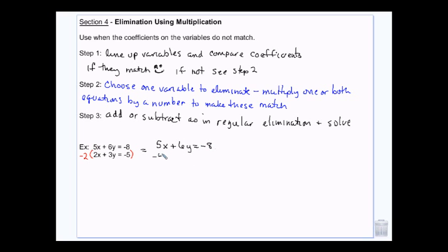So, this top equation will stay exactly the same. It's the bottom equation that will change. Negative 2 times 2 gives me negative 4. Negative 2 times 3 gives me negative 6. Negative 2 times negative 5 gives me positive 10. Once I've done that, I've distributed that 2. Then I add them together. 5x plus negative 4x is x. 6y minus 6y is 0. Negative 8 plus 10 is 2. x equals 2.